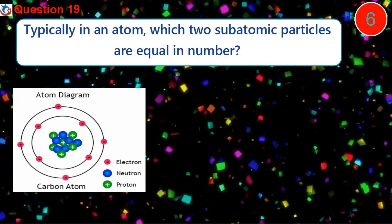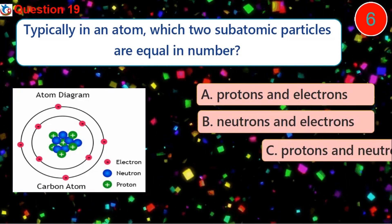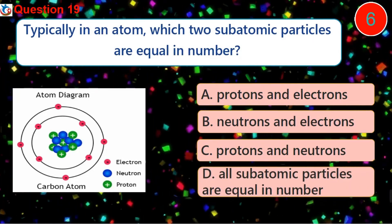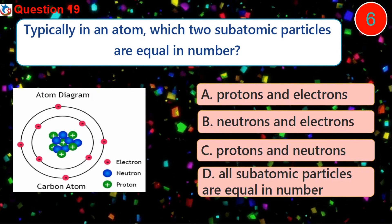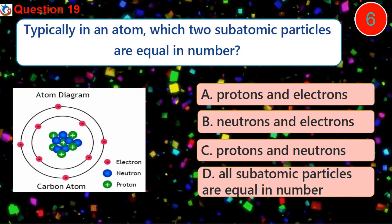Question 19. Typically in an atom, which two subatomic particles are equal in number? A. Protons and electrons B. Neutrons and electrons C. Protons and neutrons D. All subatomic particles are equal in number.